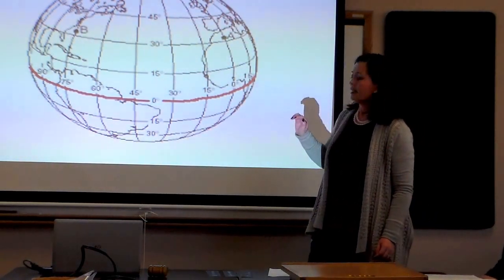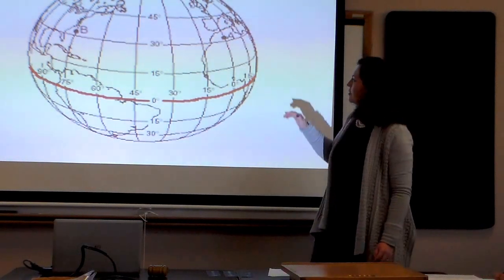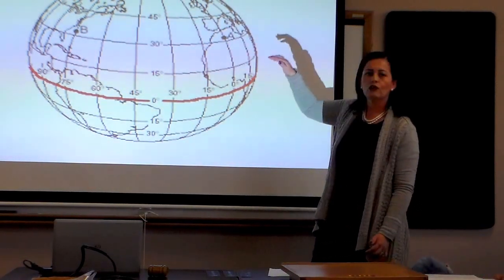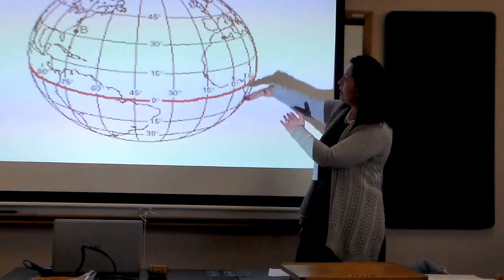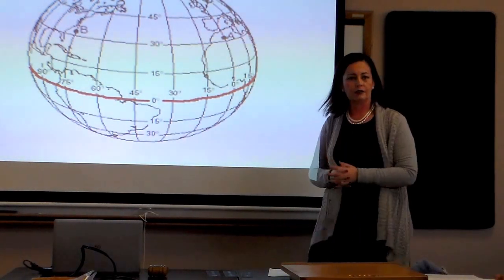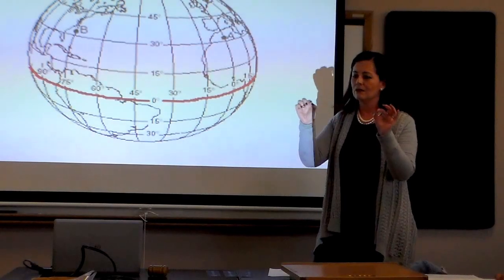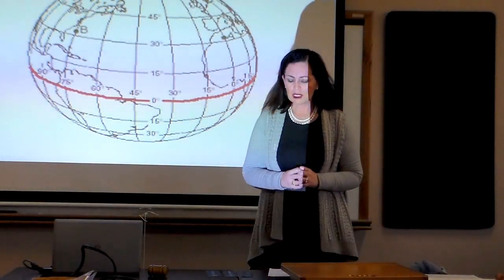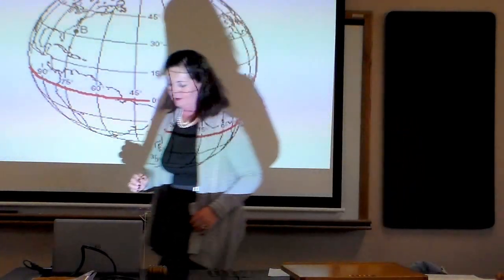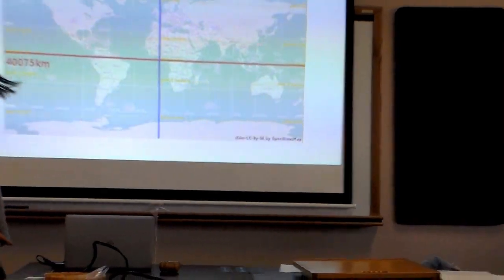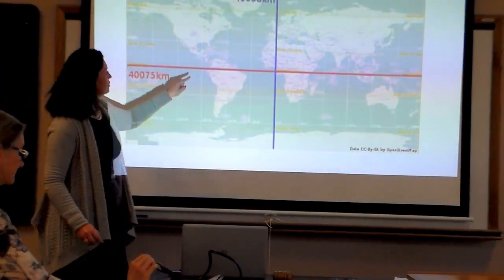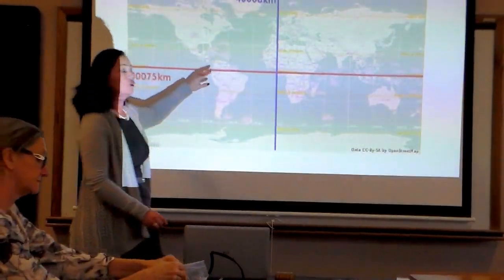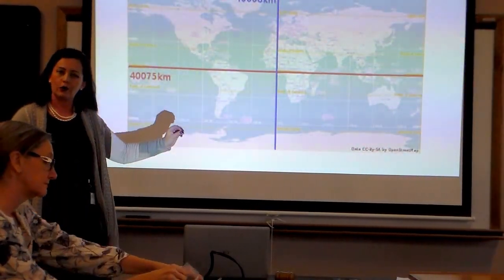The equator line is an imaginary line that is drawn in the middle of the Earth that divides the south hemisphere from the north hemisphere. So it's exactly in the middle. In that middle imaginary line, we can see that there are some countries that are across or in close proximity to the equator line.